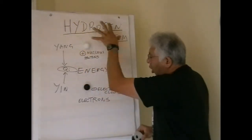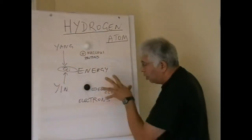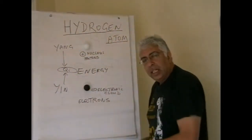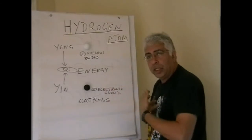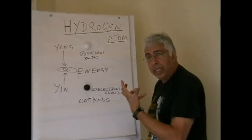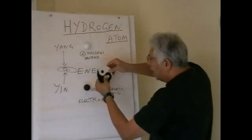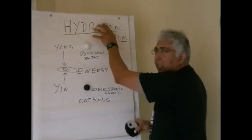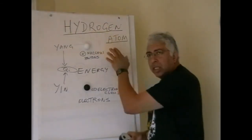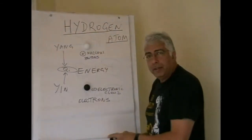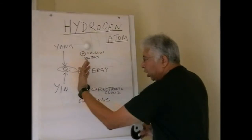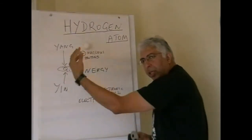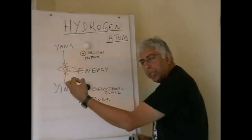Everything you look at has the Tao in it — a yin and yang — from the simplest atomic level right to the most complicated creation, which is human beings. We all have this within us. Without hydrogen we can't live. It starts from a very simple level and builds up and gets more complicated.